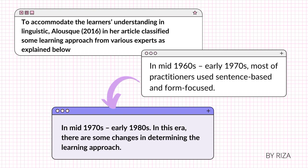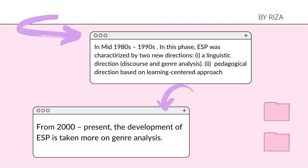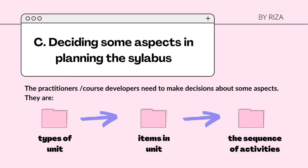The last change was related to ESP teaching, which focused on a skills and strategies approach. In the mid-1980s until 1990s, ESP was characterized by two new directions. First, a linguistic direction or discourse, which involves both text analysis and a specific analytical method, while genre analysis concerns the study of discourse form. The second direction is the pedagogical direction, which is based on a learning-centered approach. In the 2000s until present, the development of ESP has taken more focus on genre analysis. Practitioners or course developers need to make decisions about some aspects.